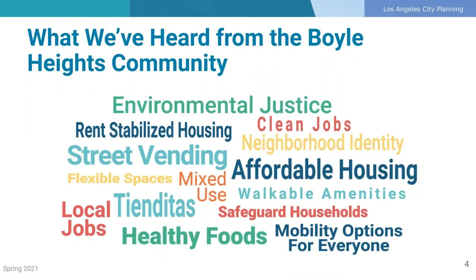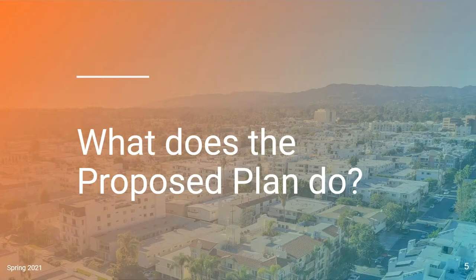This section will review the policy concepts of the Boyle Heights Community Plan update, addressed through both the policy document and the land use and zoning. These policies are a direct response to years of stakeholder input heard since the community engagement process began in 2012, and include many of the themes shown here. The community plan process takes stakeholder input, creates a draft policy document setting the policy vision for the next 20 years, and uses zoning and land use changes to implement that vision. The plan update process does not build any infrastructure or development projects, but sets the regulations for future projects in the community.